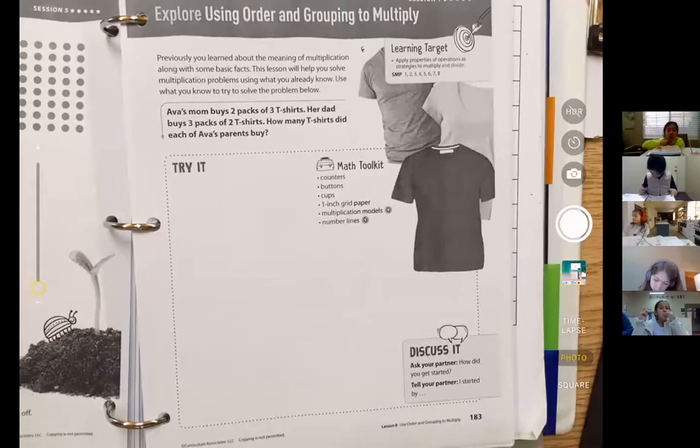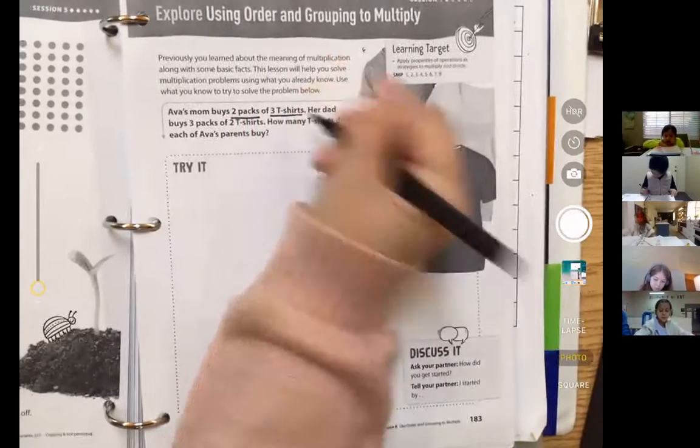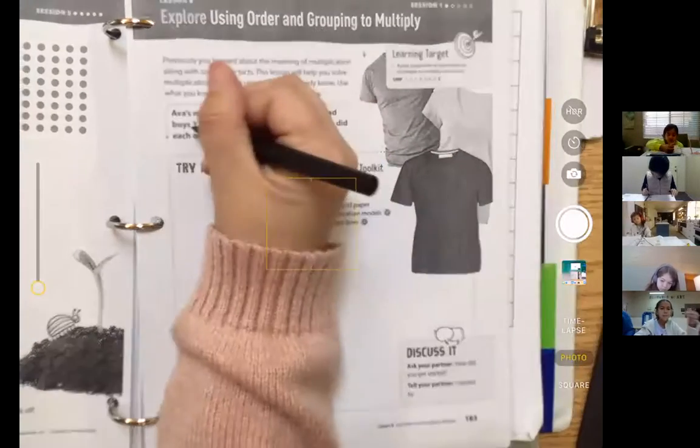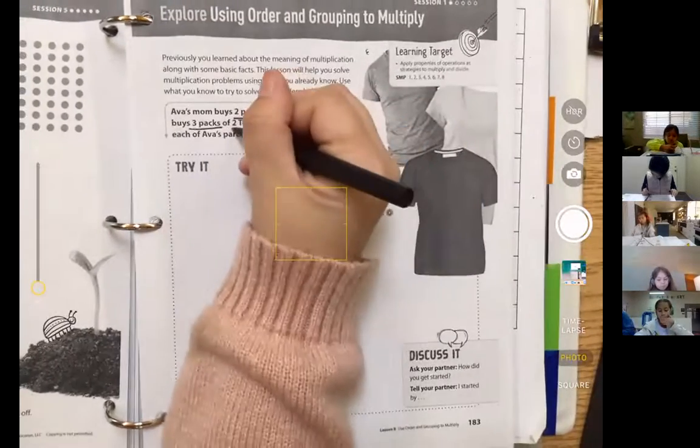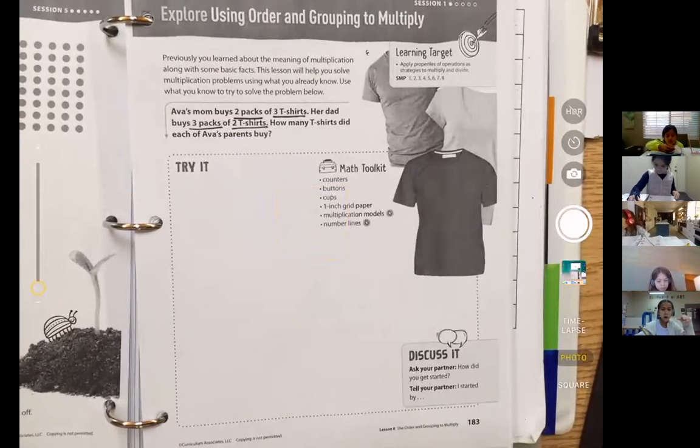Okay, so think about that. She bought two packs of three t-shirts. Her dad buys three packs of two t-shirts. How many t-shirts did each of Ava's parents buy?